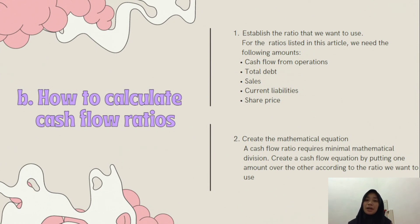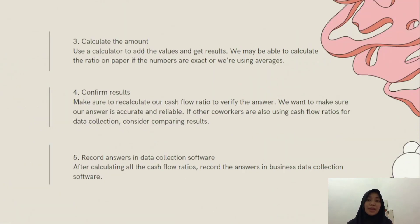The second step is to create the mathematical equations. A cash flow ratio requires minimal mathematical division. Create a cash flow ratio equation by placing one amount over the other according to the ratio you want to use. Start by writing the official equation down on paper for reference. The third step is to calculate the amount using a calculator to add the values and get the results. The important final step is to confirm the results — recalculate the cash flow ratio to verify accuracy and reliability.